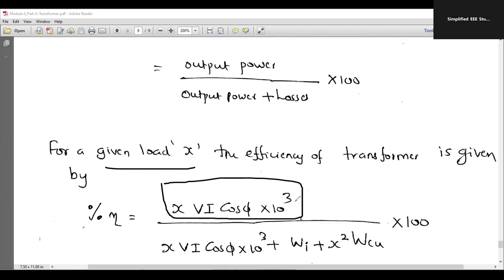x is the load divided by output. Output divided by output plus losses. Again, you need to write the output. This is output. Apart from that, you have to write the losses. What are the losses? What is Wi stand for? Wi is nothing but iron loss. What is WCU? WCU is nothing but copper loss.